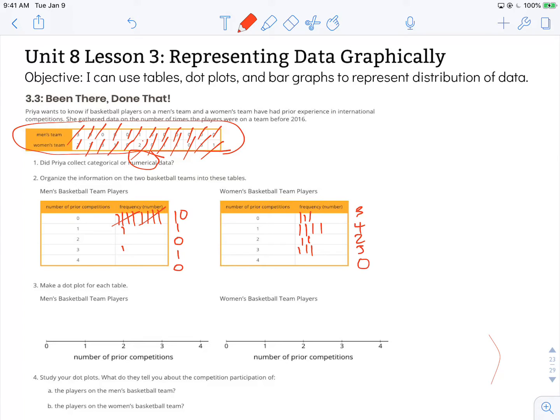Now it says make a dot plot for each table. So we're literally going to put a dot on this graphic for every value. So for the men's basketball players, we need ten dots.